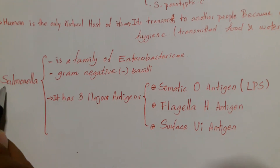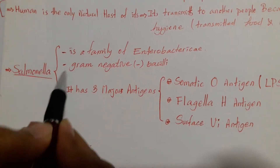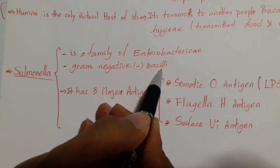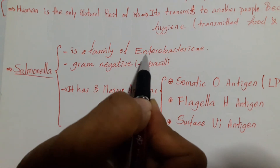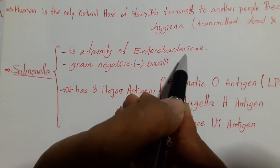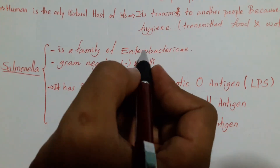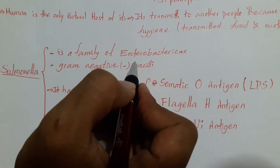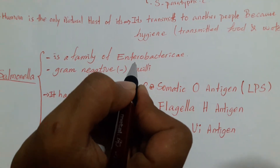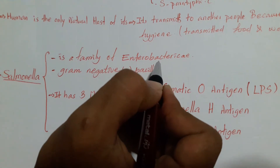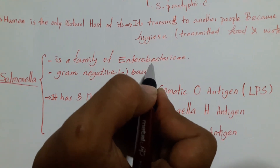Let us see some about Salmonella. Salmonella is a gram-negative bacilli belonging to the family Enterobacteriaceae. It comes through the gastrointestinal tract and will pass into our systemic circulation — meaning our blood.